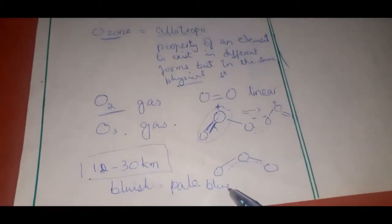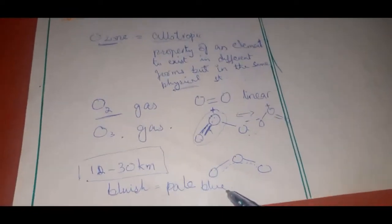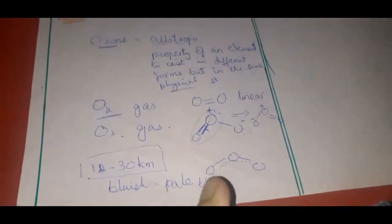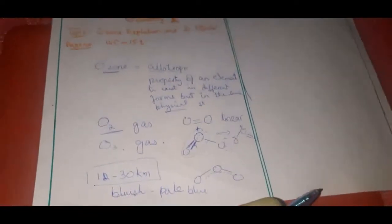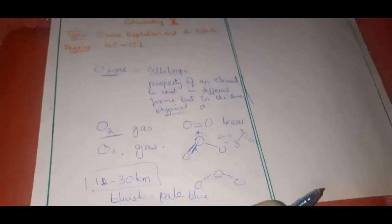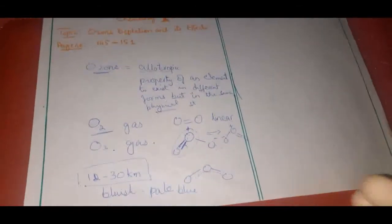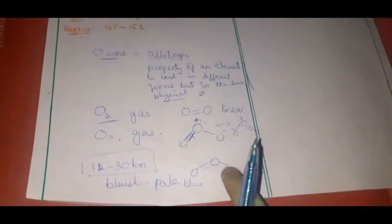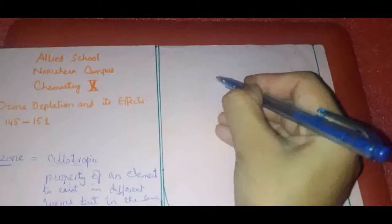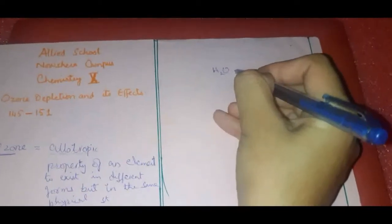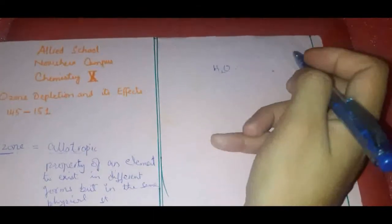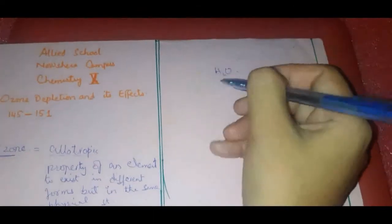Ozone has a characteristic smell — a typical irritating smell by which we recognize it. It is soluble in water, and also soluble in turpentine oil and glacial acetic acid.